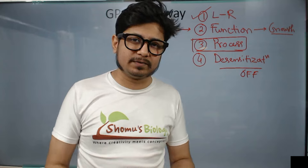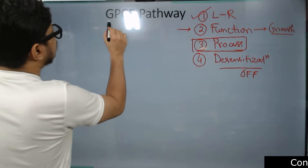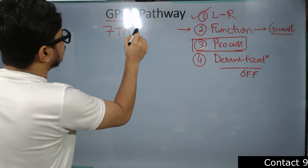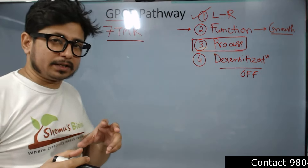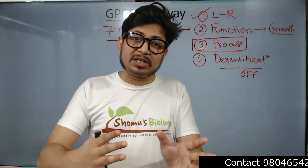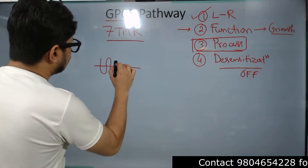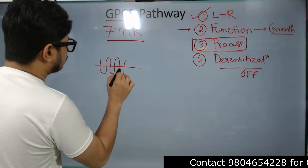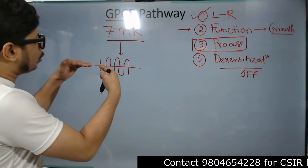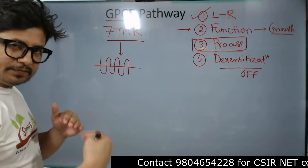The GPCR pathway involves the G protein-coupled receptor. This G protein-coupled receptor is a 7-transmembrane receptor. You need to understand the receptor type, because based on the receptor type, the signaling pathway totally varies. This 7-transmembrane receptor spans the membrane 7 times. It has some portions on the outside of the cell — the extracellular side — and some portions on the intracellular side, facing the cytosol.